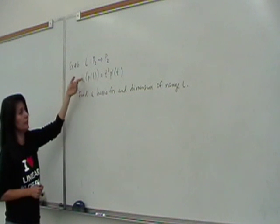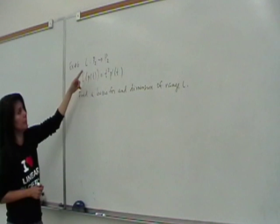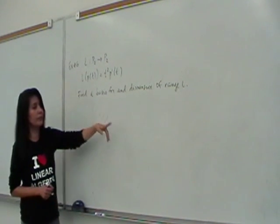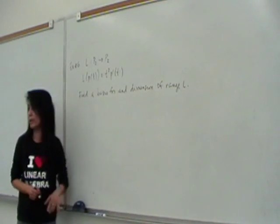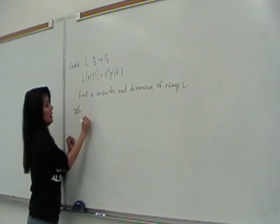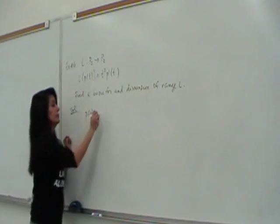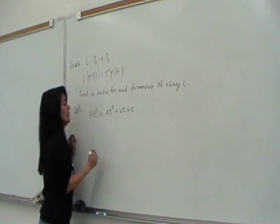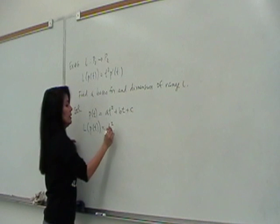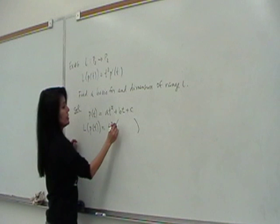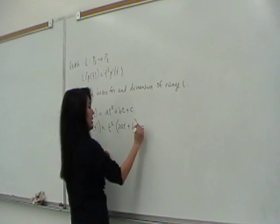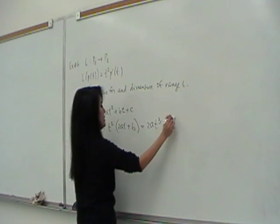So this exercise number six, again, we made this before. This is the linear transformation from P2 to P2, where P of T in P2 is mapped to T squared times P prime of T. Our problem is to find a basis for the range of L and a dimension. Of course, we answer these two questions at the same time, for the range of L. So how will we start doing this? So again, let's look at the typical element of P2. What will a P of T look like? It's going to be AT squared plus BT plus C. And let's look at what L will do to P of T.